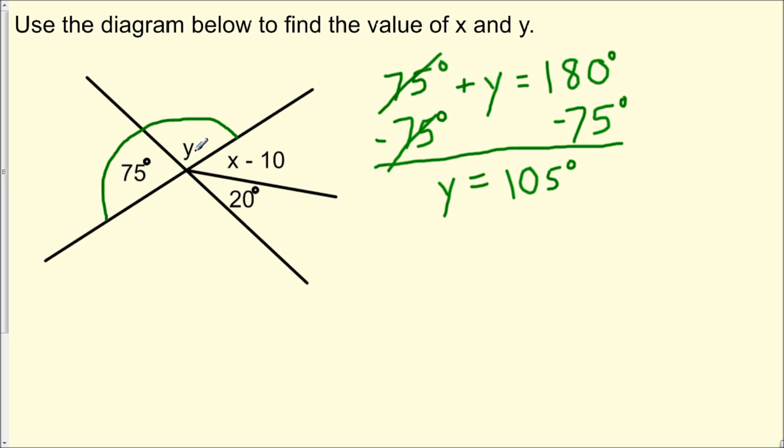So what we could do is now focus on a different straight angle segment. That is, now that we know that y is 105 degrees, we could focus on another straight angle. We have this 105 degree angle, this angle x minus 10, and this angle of 20 degrees.